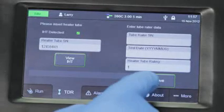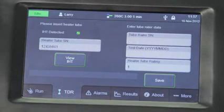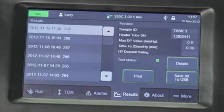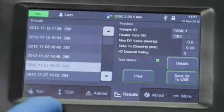To save the data onto the IHT and into the file database on the instrument, 100 tests can be saved on the unit and can also be saved on a USB drive. You can see the test results on the screen as well as print them from the results tab.